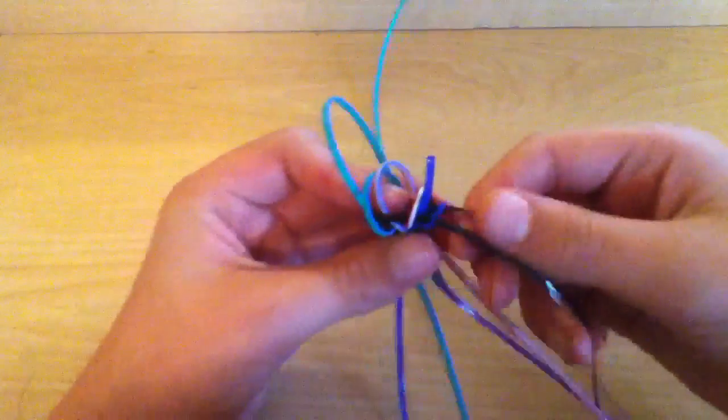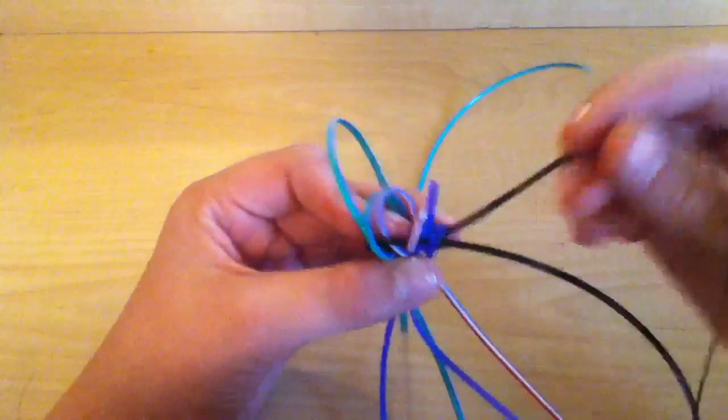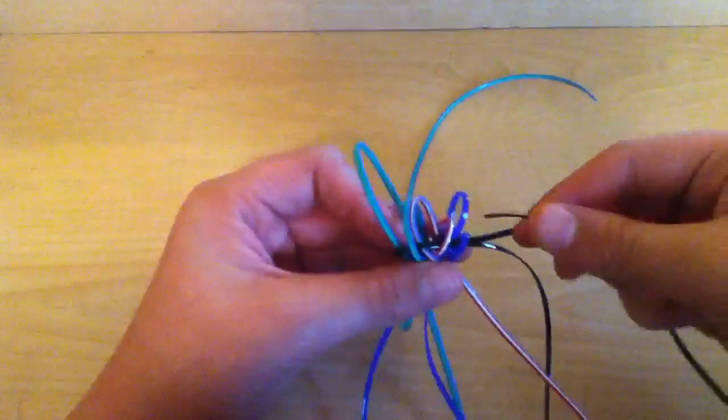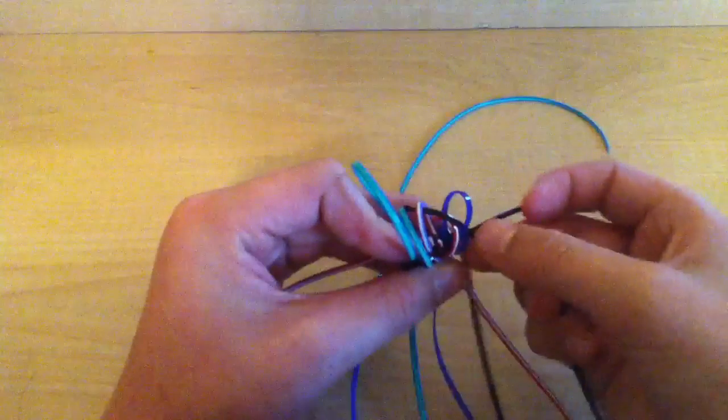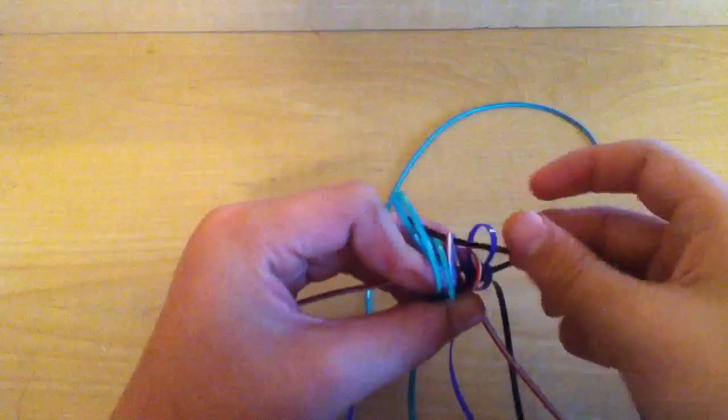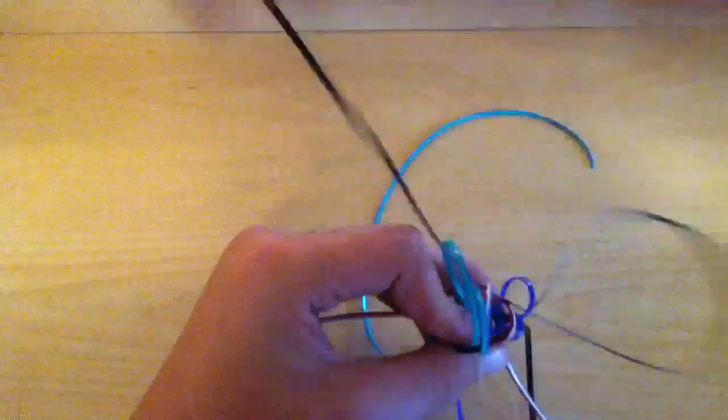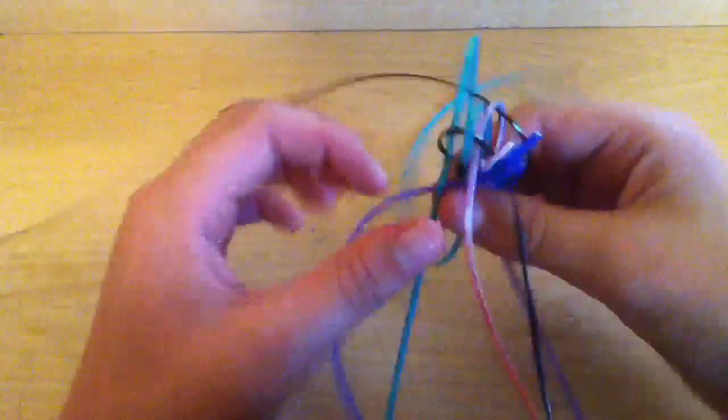Okay. So now with your last long string, you're going to take it through all the loops that stick out, which were the ones that you originally brought down, and you're going to do that diagonally. And then tighten it, and it does it just like the other one did.